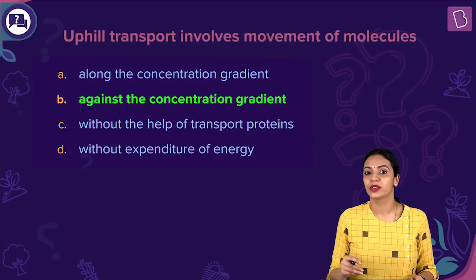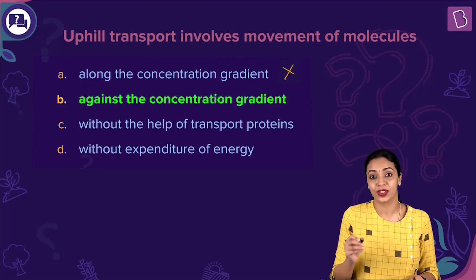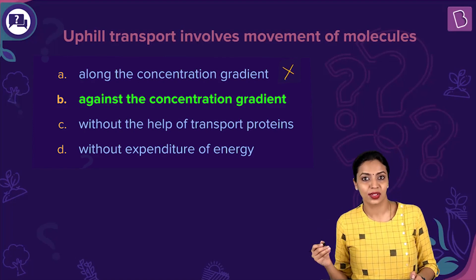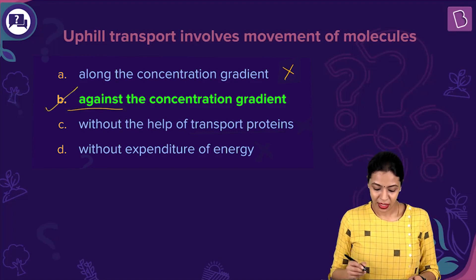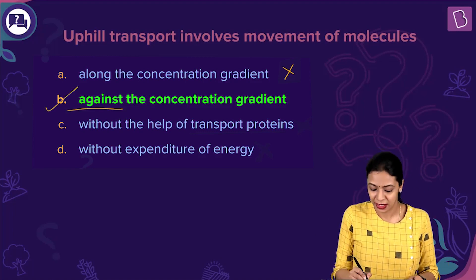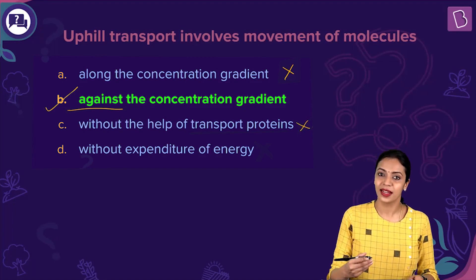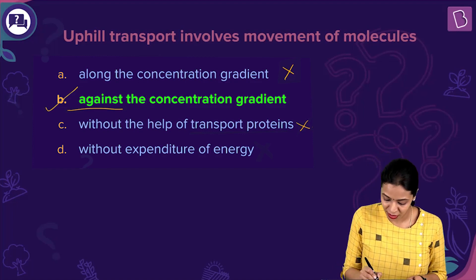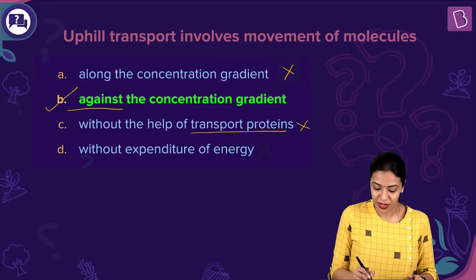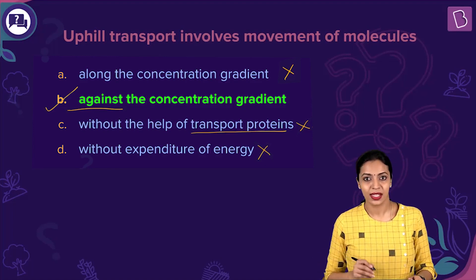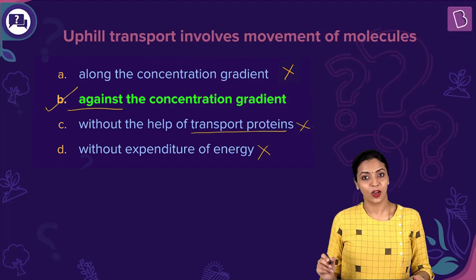The sodium-potassium pump transports three sodium ions outside for every two potassium ions inside. ATP hydrolysis takes place and sodium ions are transported outside. This is a transmembrane protein that uses ATP to pump molecules against the concentration gradient. Now examining the options: option A — along the concentration gradient — is incorrect, because movement is against the gradient. Option B is correct: it happens against the concentration gradient. Option C — without transport proteins — is incorrect, as the sodium-potassium pump demonstrates protein involvement. Option D — without energy expenditure — is also incorrect, as ATP is required. The correct answer is option B.